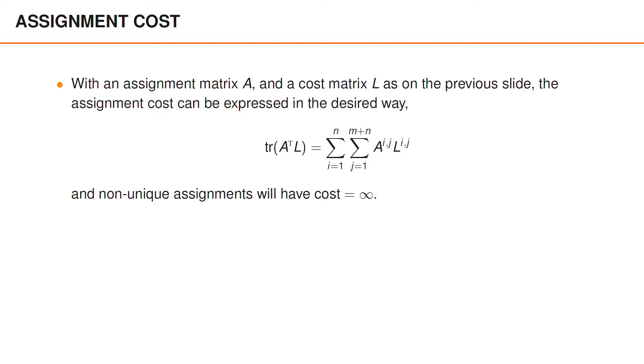For a hypothesis, the association weight for the assignment matrix A and the cost matrix L is the exponential function of the negative trace of A transpose L.